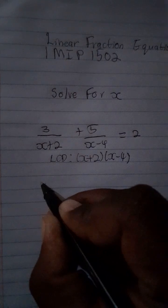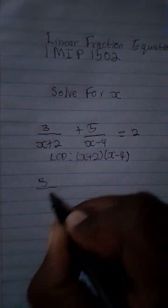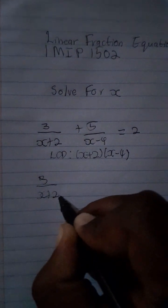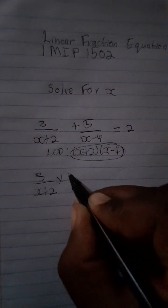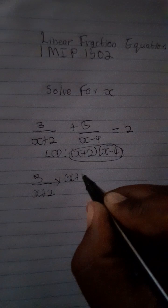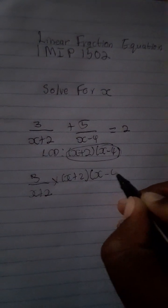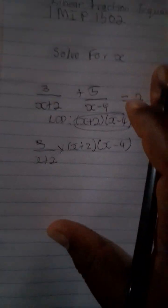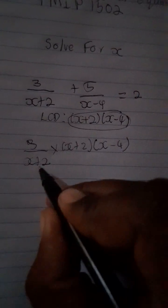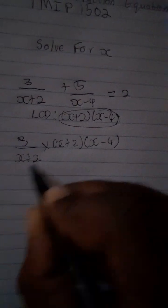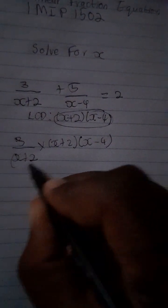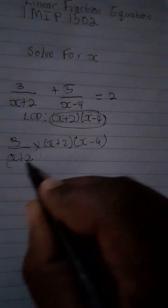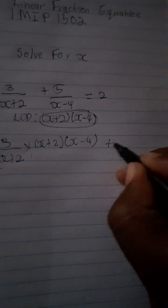First, take the fraction 3 divided by (x + 2) and multiply it by the LCD, which is (x + 2)(x − 4). We can see that we have common brackets — (x + 2) in the numerator and (x + 2) in the denominator — so those will cancel.